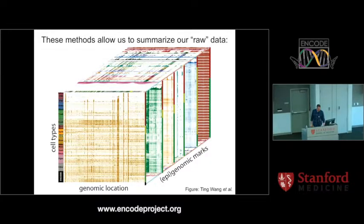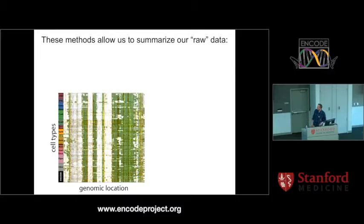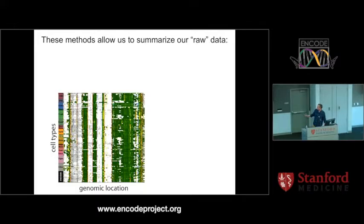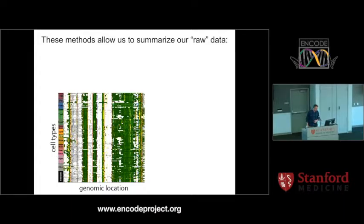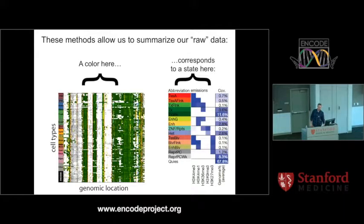What ChromHMM and Segway allow you to do is essentially summarize it in that one dimension, so you end up with a 2D matrix like this instead. This is the output of ChromHMM. For a given genomic region across all these different cell types, you see how they behave in terms of epigenomic marks. Like Jason already showed you, you see a lot of green stuff here — that means it's probably transcribed. You see some red stuff for the promoter, some yellow for enhancers, et cetera. Any given color corresponds to a state in the chromatin state model, and this is conceptually identical between ChromHMM and Segway.